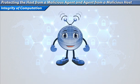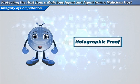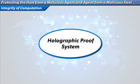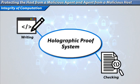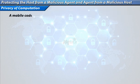To make the proof-checking process faster, the proof is transformed into a holographic proof. A holographic proof system is a system for writing and checking proofs in which one can probabilistically check the validity of a proof by examining only a few of its bits.